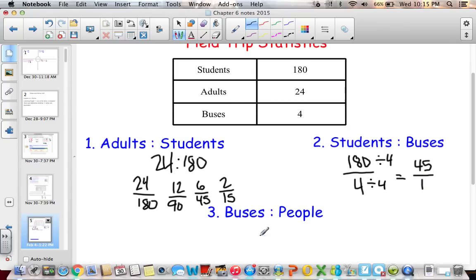And then buses to people. So we have 4 buses. And we have 180 plus 24. So we have 204 people. So I know that I can divide everything by 4. And I get, so 4 divided by 4 is 1. 204 divided by 4 is 51. So this tells me that for every bus, there's 51 people on it. 45 students on every bus. And then 6 adults per bus. We can figure that out by using the data that we just came up with.